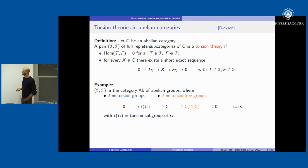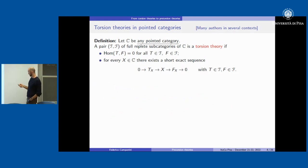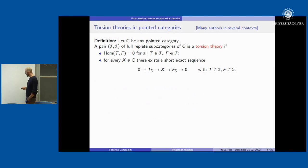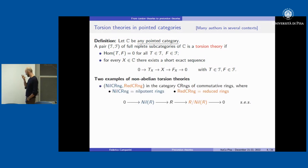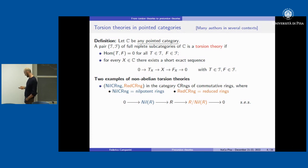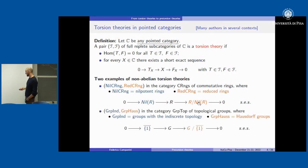Actually, the condition of being abelian is not necessary — we can repeat the same definition in any pointed category; the only thing we need is to have the zero object. In fact, there are several examples outside the abelian case. The first one is in the category of commutative rings, where we have the nilpotent rings as the torsion part and the reduced rings as the torsion-free part, with the nilpotent ideal giving the short exact sequence for every ring.